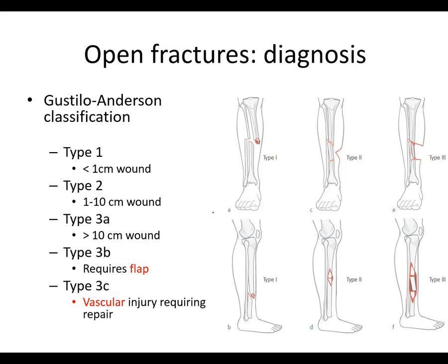Infection incidence goes up the ladder as you go from type 1 — pretty low incidence, single digits — to type 3b and type 3c, where you have much higher incidence of infection. Type 3c is when you have a vascular injury requiring repair. So just because you have maybe the peroneal artery injured in a tibia fracture doesn't mean it needs repair — then it's not a type 3c. Type 3c really means the limb is completely at risk of limb loss. That also increases the ischemia and the potential for infection.